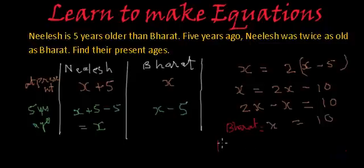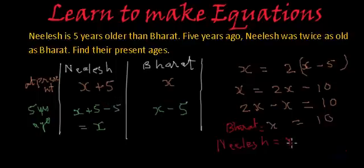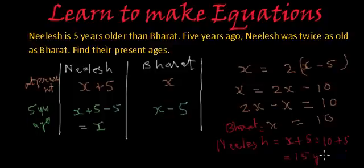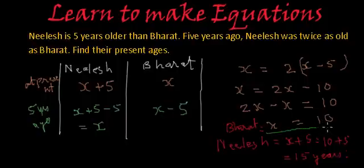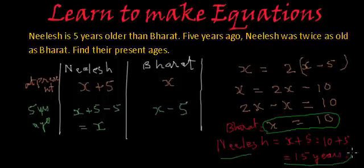And what about Nilesh? Since Nilesh is 5 years older than Bharat, Nilesh's age will be X plus 5, which is 10 plus 5, which is 15 years. So we have found Bharat's age — Bharat is 10 years old — and Nilesh's age — Nilesh is 15 years old. This was the first method, where we used only one variable. In the next method, we are going to use two variables.